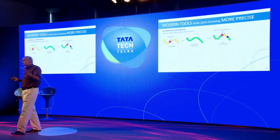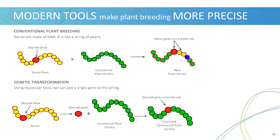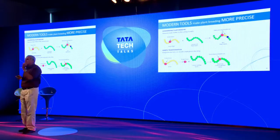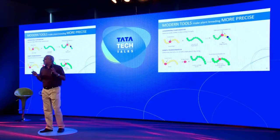One specific difference between earlier tools and modern tools: when you cross and create variation, it is quite possible that in addition to the gene you want to transfer, some additional regions are also transferred. But with new molecular tools, you can precisely excise out just the region you want to transfer. With the new tools, plant breeding or crop improvement has become much more precise.